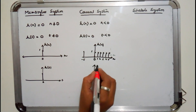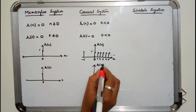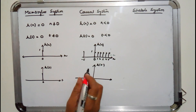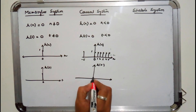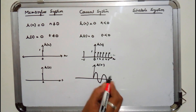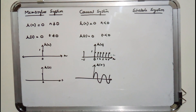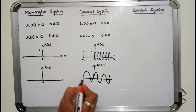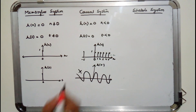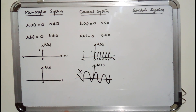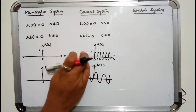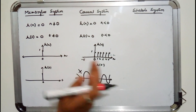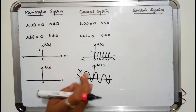Similarly for h(t): if h(t) is a waveform that starts from zero and goes to infinity, then it is causal. But if there is a waveform to the left of zero, it is non-causal. Simply put, h[n]=0 for n less than zero means there should be no waveform to the left of n=0.